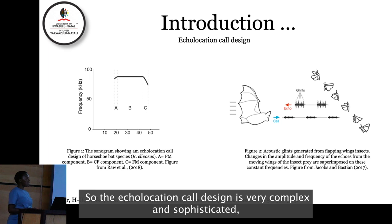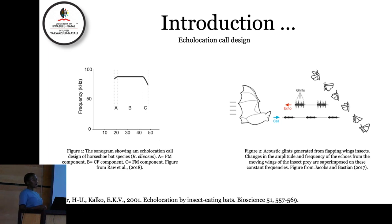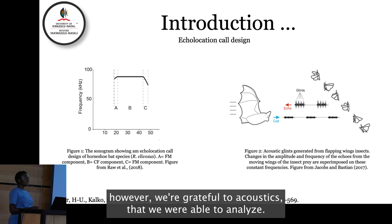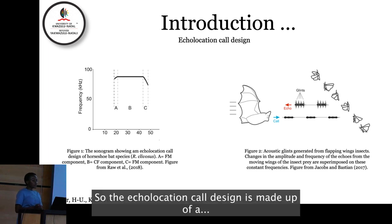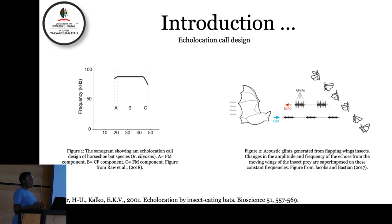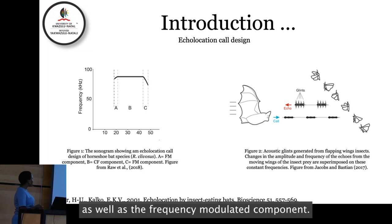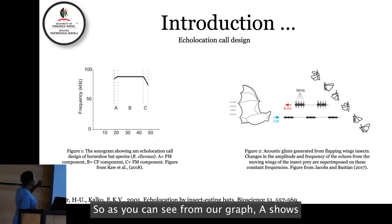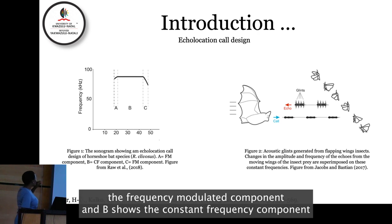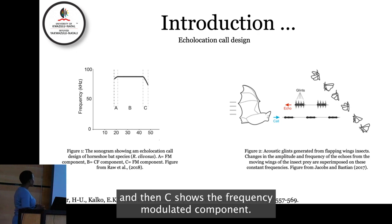The echolocation call design is very complex and sophisticated. We are able to analyze it using acoustics. The echolocation call design is made up of a frequency modulated component, a constant frequency component, as well as a frequency modulated component. As you can see from the graph, A shows the frequency modulated component, B shows the constant frequency component, and C shows the frequency modulated component.